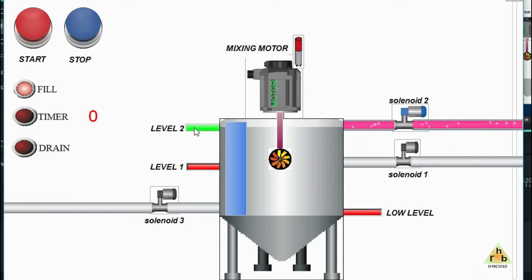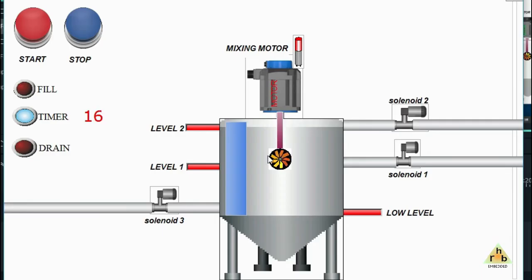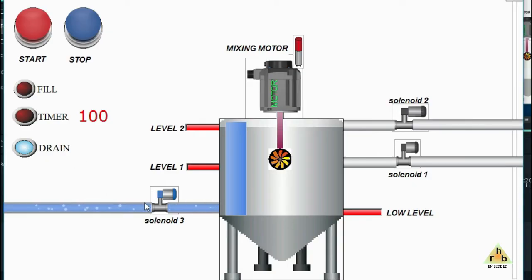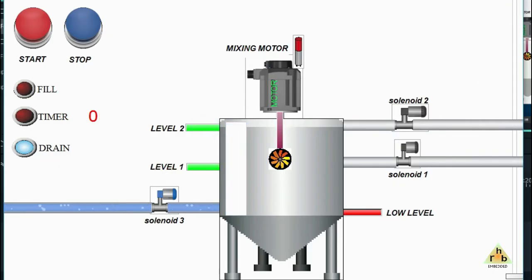As soon as Level 2 detects the maximum level, the motor starts running and spins the blade to mix the liquids within the tank. At the same time, the timer starts running for 10 seconds — the motor lamp turns on and the timer counts up. After 10 seconds the motor stops, spinning stops, and the drain valve opens. As the liquid drains and the low-level sensor is triggered, the process repeats.